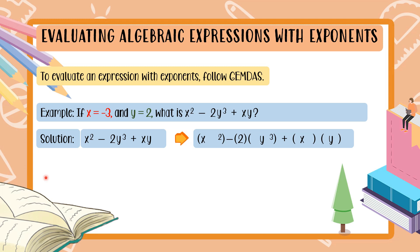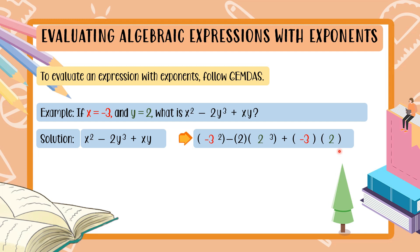Let's write the solution. We expand the problem: x squared minus 2 times y cubed plus x times y. First step: substitute the values — x becomes negative 3 (in both places) and y becomes 2 (in both places). Then solve using GEMDAS. No groupings, so let us go to exponents. The terms with exponents are negative 3 squared and 2 cubed.